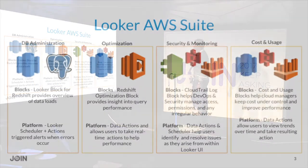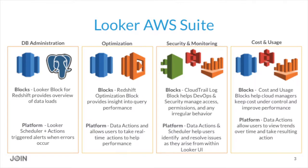Quick background on AWS and Looker. As most of you probably know, Looker is an in-database technology — we execute queries directly against a database. We never pull your data into our cloud, you don't need to cube your data, anything like that. Because of this architecture, we're really able to leverage the raw underlying power of Amazon's databases and querying engines better than any other BI tool on the market. And AWS is always making these things faster, so Looker is always getting faster as well.